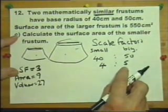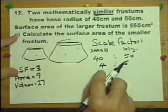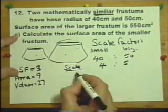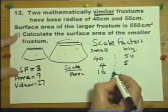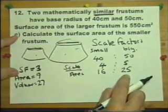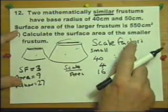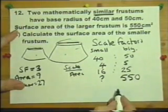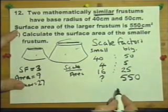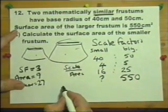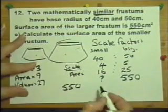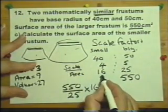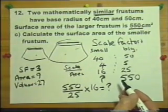Now if the ratio of their lengths, widths, heights, and radii is four to five — that's called the scale factor or the scale ratio — then the area will be four squared to five squared, which is the ratio of their areas. We're told the surface area of the larger frustrum is 550, and we're trying to find the surface area of the smaller frustrum. So dividing by 25 and multiplying by 16 will give us the surface area of the smaller frustrum.